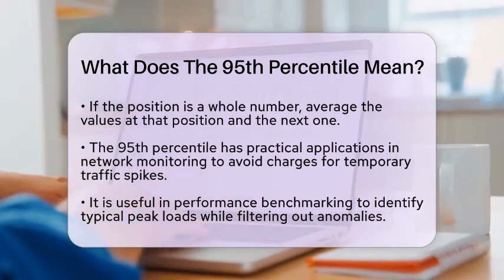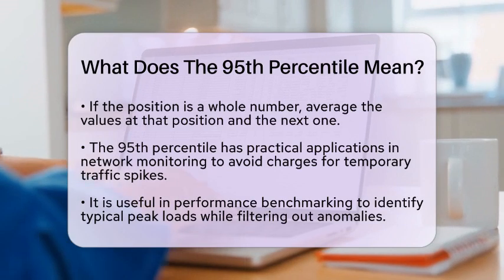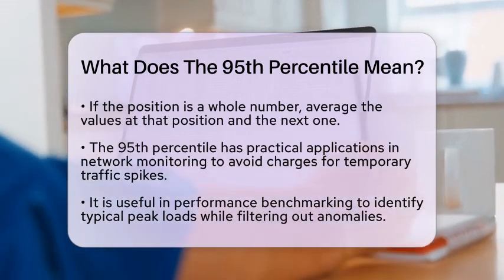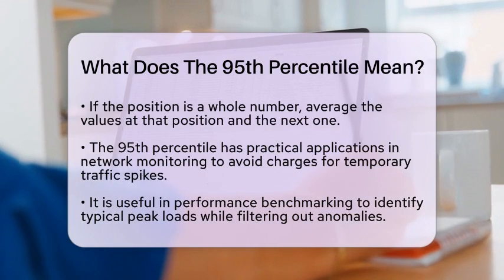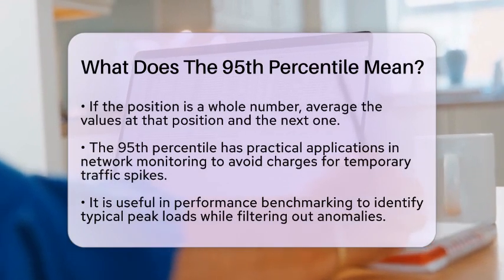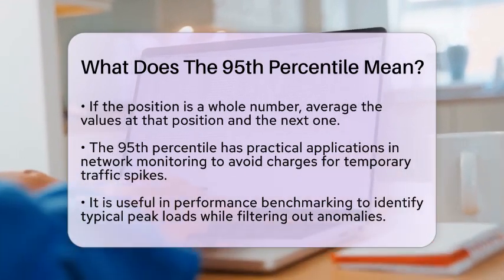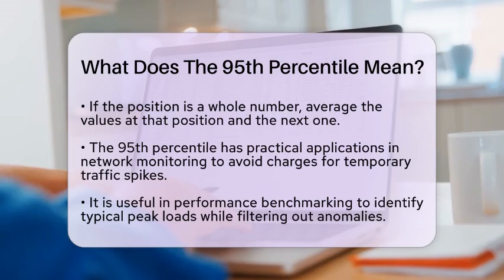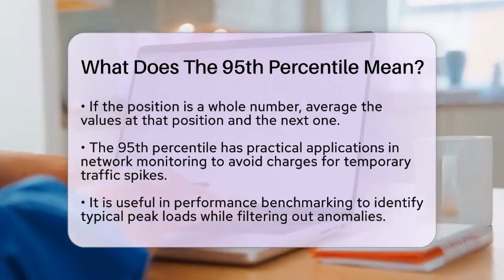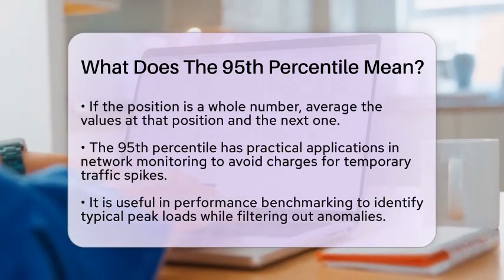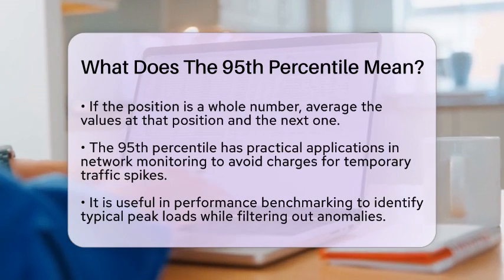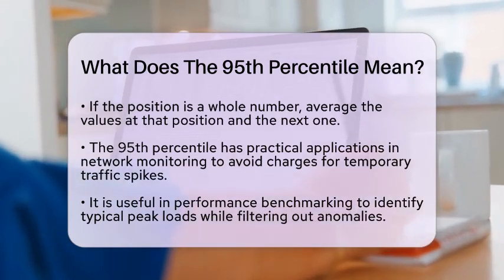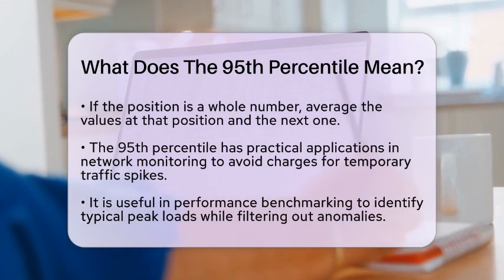When comparing the 95th percentile to other statistical measures, it stands out. The average can be influenced by extreme values, while the median represents the middle point and does not reflect high-end data. The maximum value simply shows the highest point, which may not represent typical conditions.